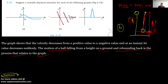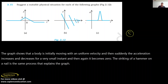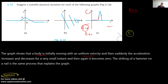Now graph C suggests a suitable physical situation. Looking into graph C, this is your acceleration and time graph. The graph shows that the body is initially moving with uniform velocity — because acceleration is zero, which means the body is moving with constant velocity. After certain time, the acceleration increases and suddenly decreases for a very small instant, and then again becomes zero.